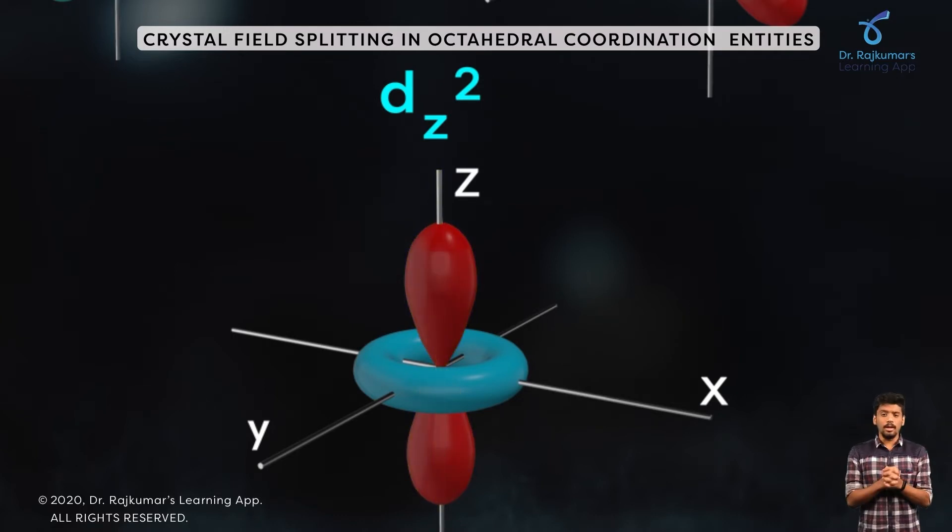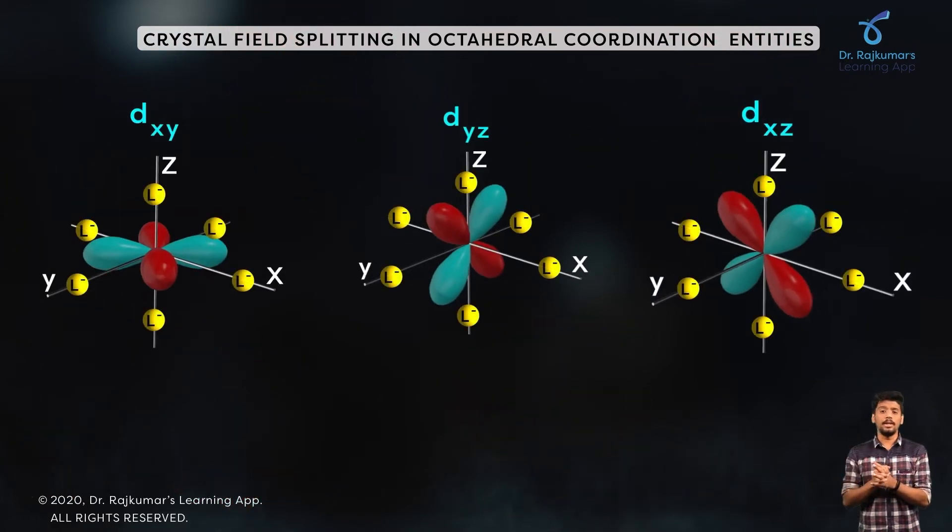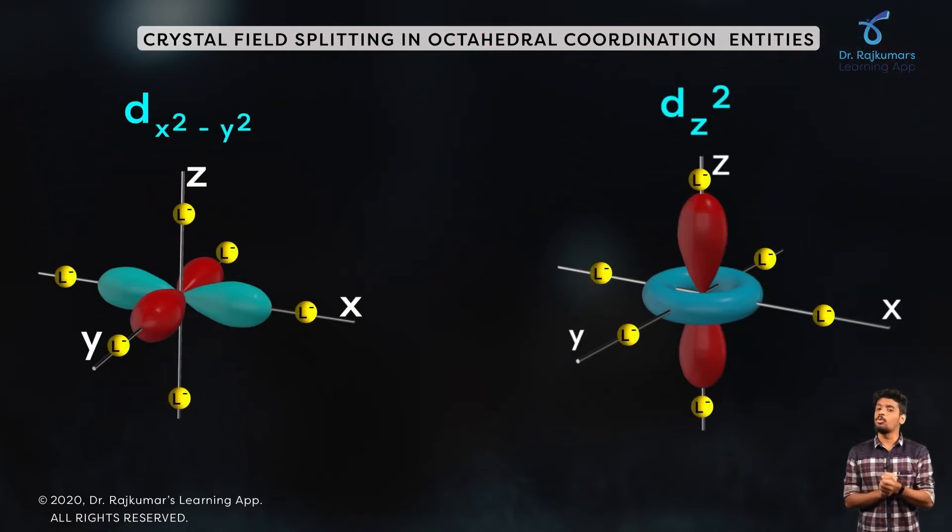When the ligands approach the d orbitals in d_xy, d_yz, and d_xz, the ligands are directed away from the d orbitals. But in the case of d_x2-y2 and d_z2, as their orbitals lie on the axis as well as the ligands, the d orbitals are directed towards the ligands.